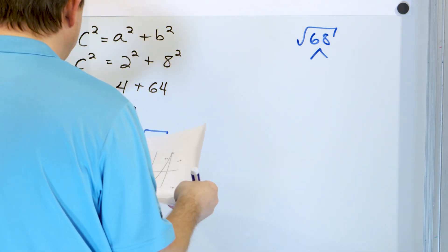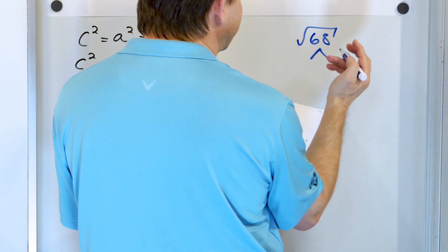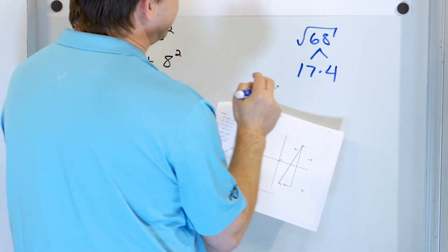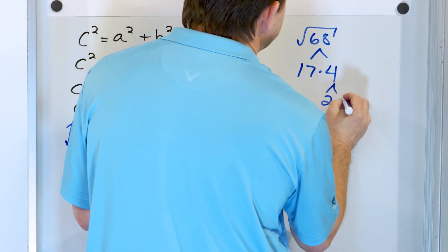So what times what is 68? Well, it appears that it's divisible by two, but it turns out this is divisible by four as well. 17 times four works out to be 68. And then the four is two times two. I'm looking for pairs.